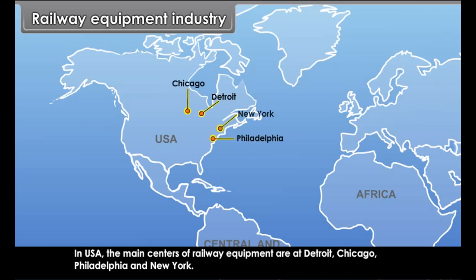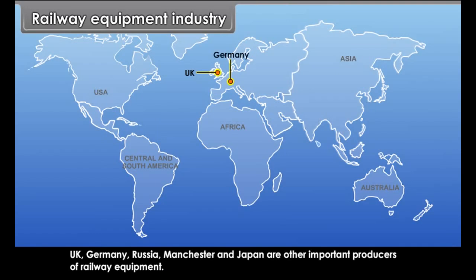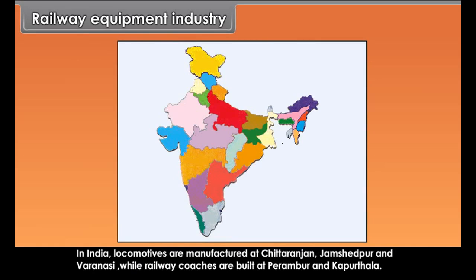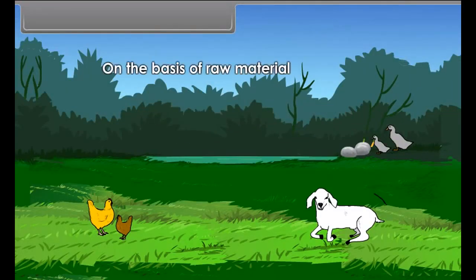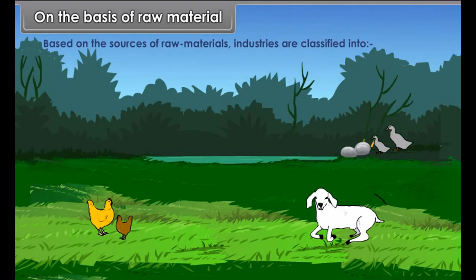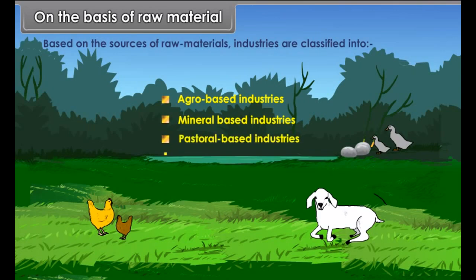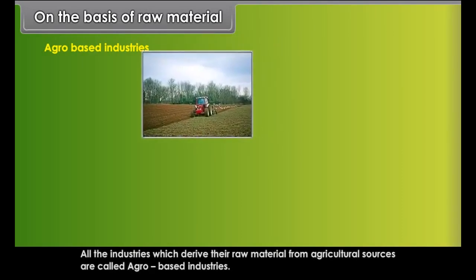Railway rolling stock industry is largely developed in Europe and North America. This industry manufactures locomotives powered with steam, diesel, or electricity, and rolling stock including coaches, wagons, and oil tankers. In USA, main centres are Detroit, Chicago, Philadelphia, and New York. UK, Germany, Russia, Manchester, and Japan are other important producers. In India, locomotives are manufactured at Chittaranjan, Jamshedpur, and Varanasi, while railway coaches are built at Perambur and Kapurthala.